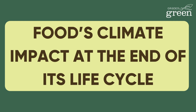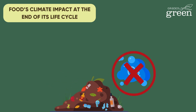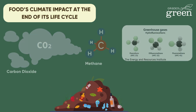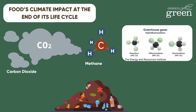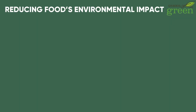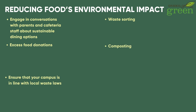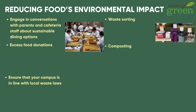Food also contributes to climate change at the end of its life cycle in a major way. When food waste is not properly managed and stored somewhere with limited oxygen available, like a landfill or a dump, it breaks down into short-term pollutants that rapidly warm the atmosphere, like methane, black carbon, and hydrofluorocarbons. Luckily, schools can help reduce food's climate impact after it becomes food waste. Districts should engage in productive conversations with parents and cafeteria staff about sustainable dining options, while establishing proper materials management practices through campus waste sorting, excess food donations, and composting. Ensure that your campus is in line with local waste laws that may require all food waste to be diverted from the landfill bin to the organics bin in both the kitchen and end-user disposal systems.